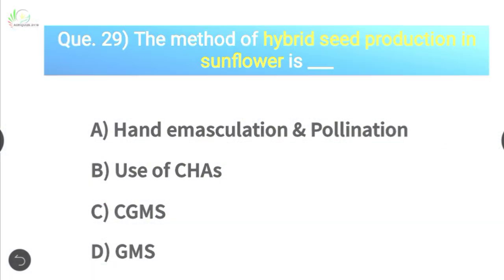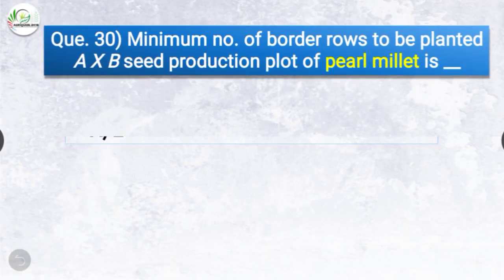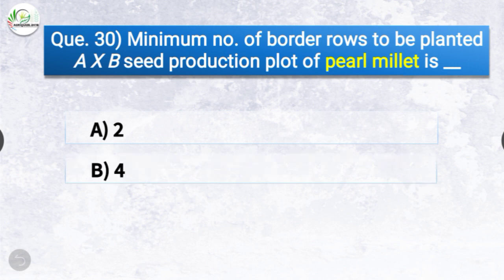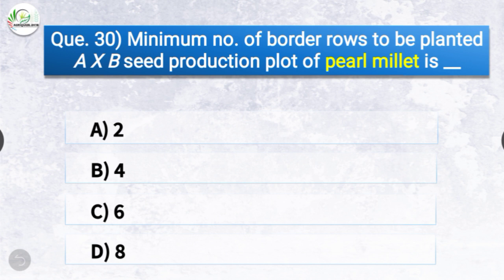Question number thirty: Minimum number of border rows to be planted for the A × B seed production plot of pearl millet — the options are 2, 4, 6, or 8. The correct answer is option D — 8. The minimum number of border rows to be planted for the seed production plot of pearl millet is 8.